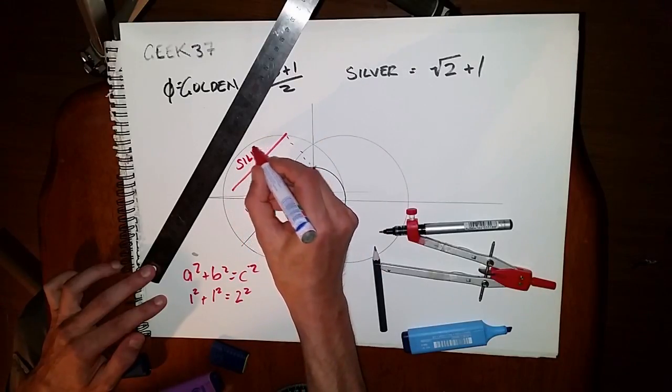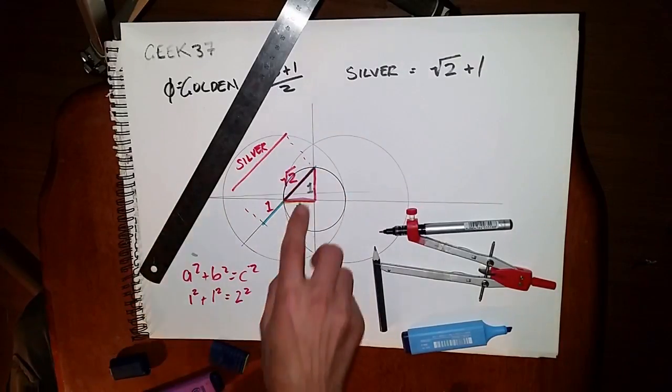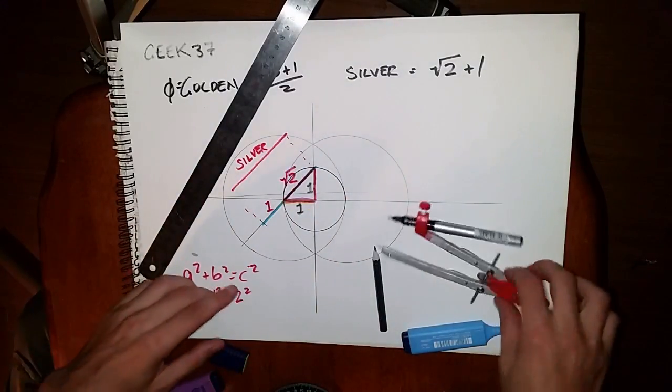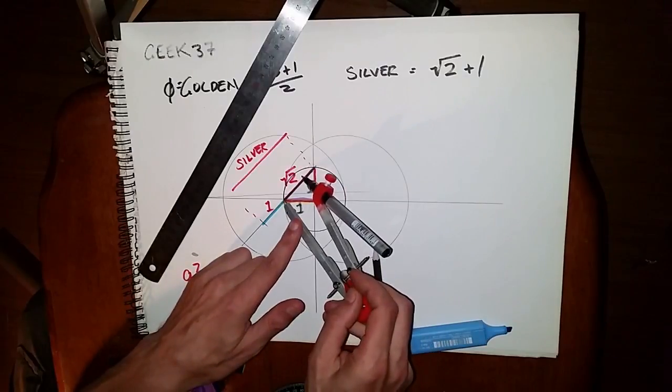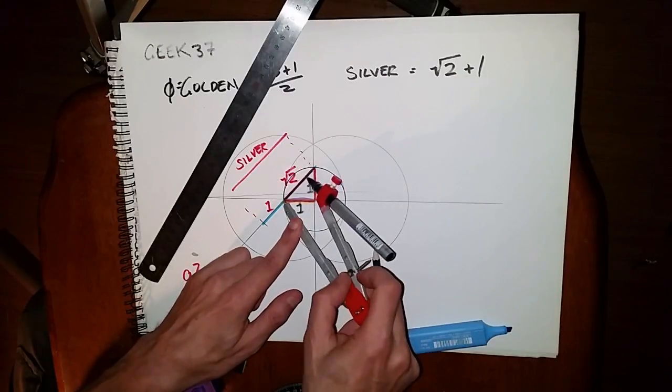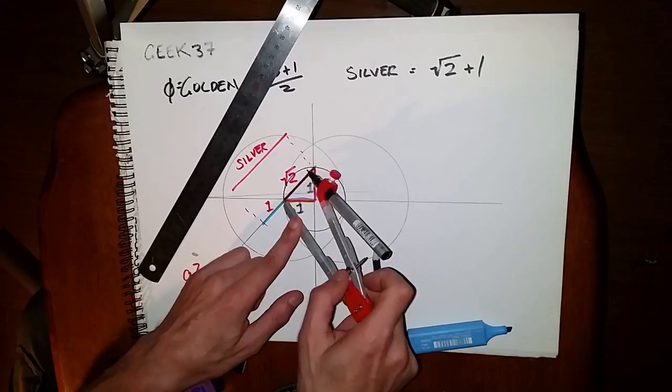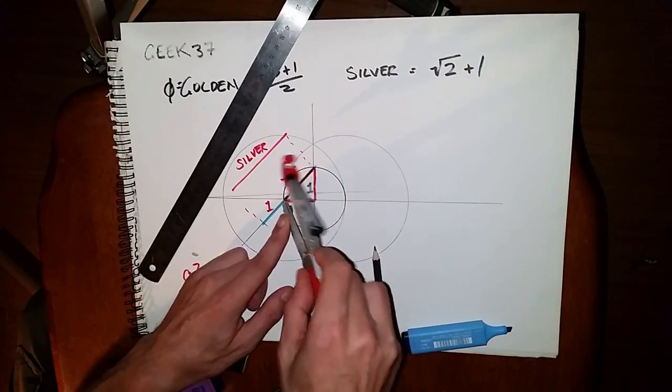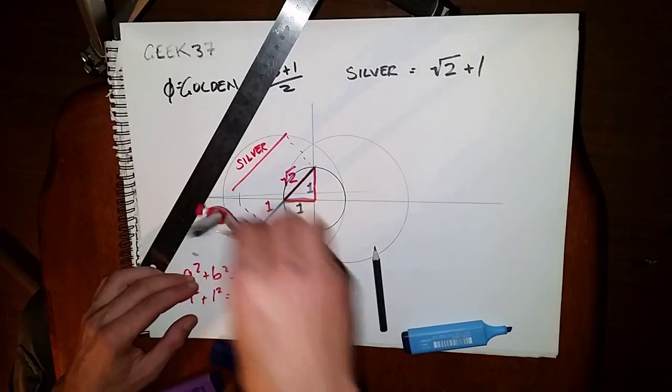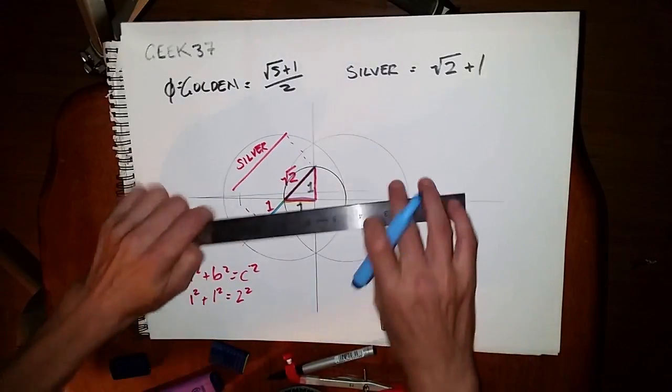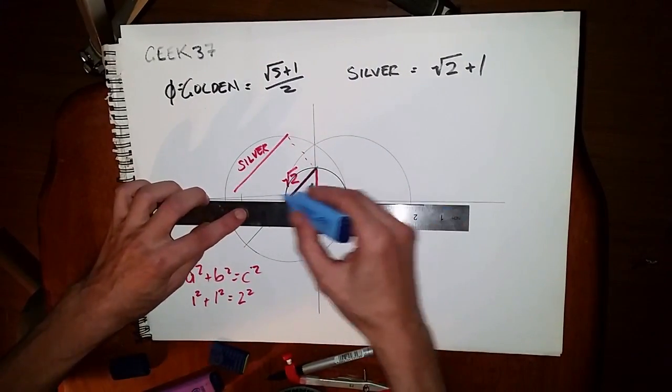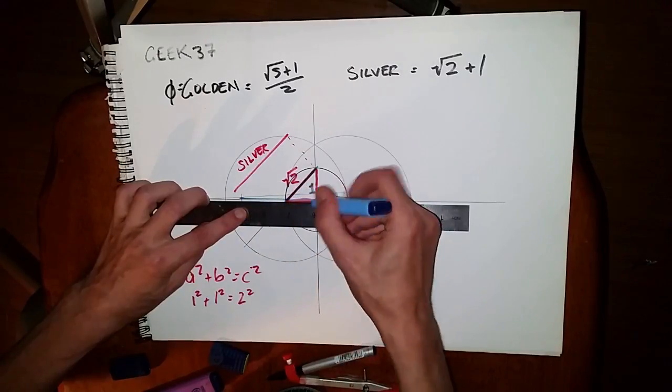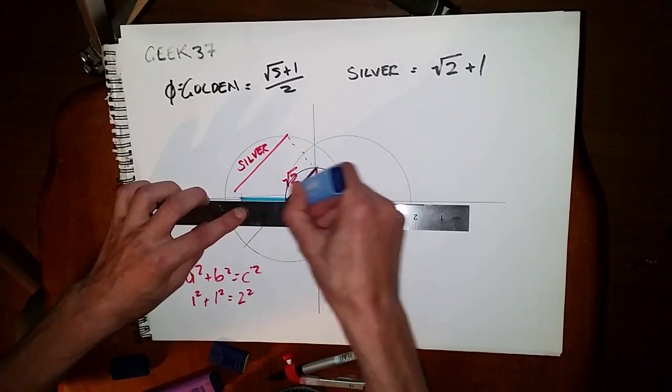But I want to keep it on that line as well. So again, another way you could do it, you just reset your compass to the square root of two, 1.414, around about there, and this would now also be the silver ratio.